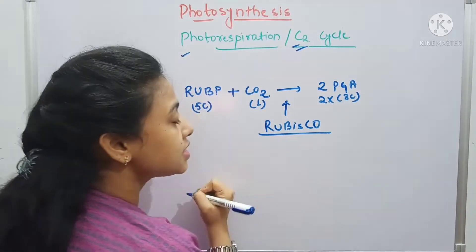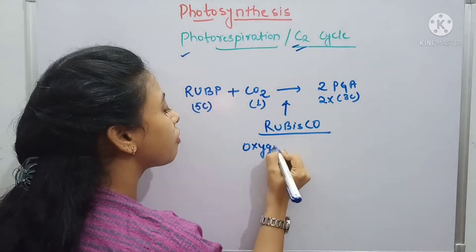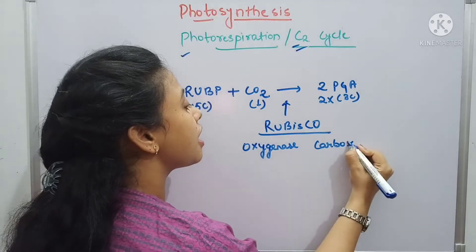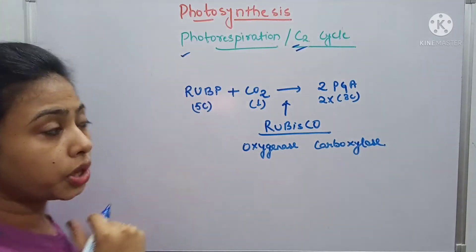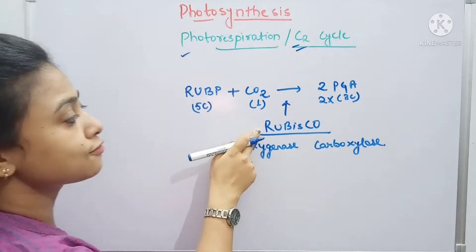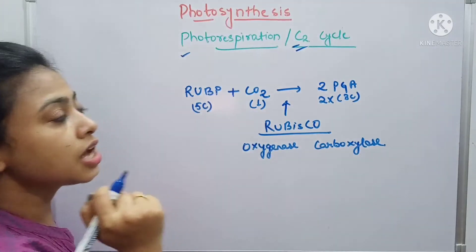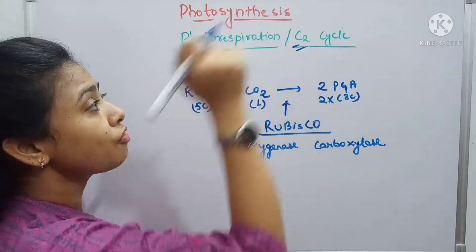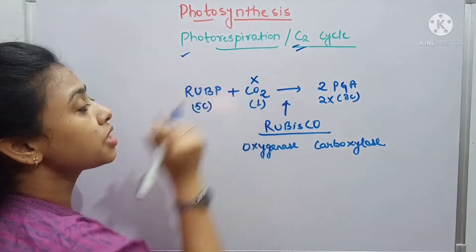RuBisCO enzyme has both oxygenase and carboxylase activity. It performs both because its full name is ribulose oxygenase/carboxylase enzyme. Now, sometimes in the case of the C2 cycle, what happens if the CO2 concentration becomes very low?